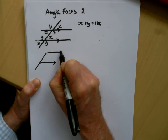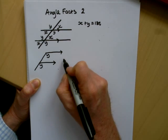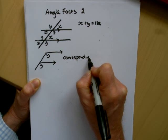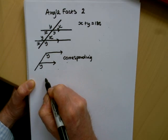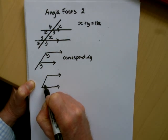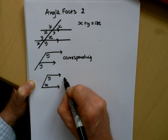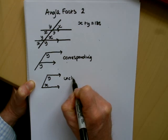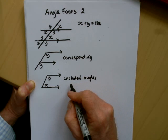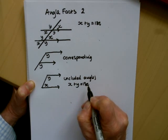So we have what are called our F-angles. If we take the angle here and here, they're called corresponding angles. If we look at the U-shape or C-shape, these are called the included angles, also known as co-interior angles. They add up to 180, as you can see from the top of the diagram.